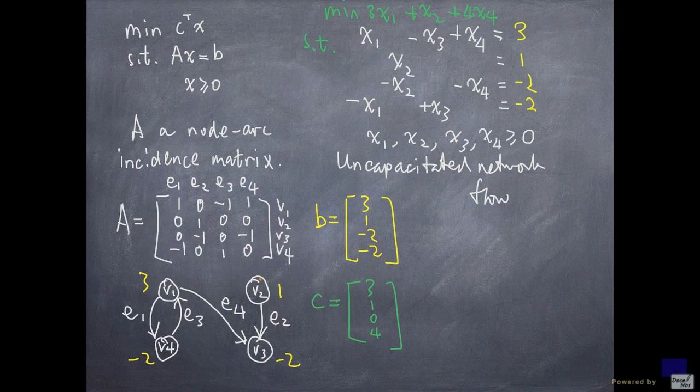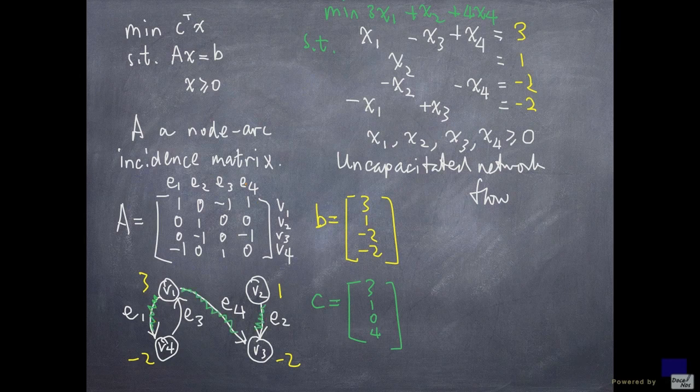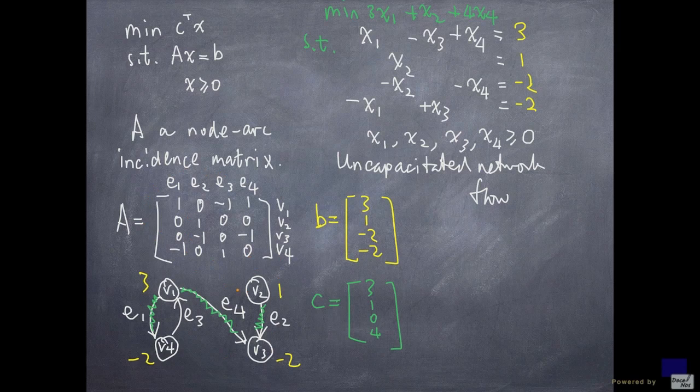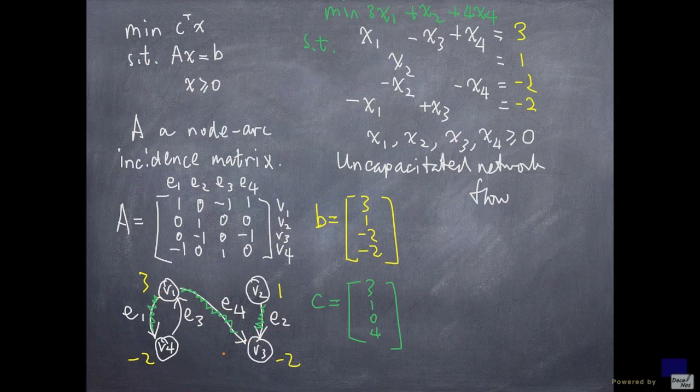Another interesting property is that if you're looking for a basis, what you're looking for is a tree. So if your node-arc incidence matrix has n rows, and say the graph is in one piece, what we'll be looking for is going to be n-1, n trees in the basis.